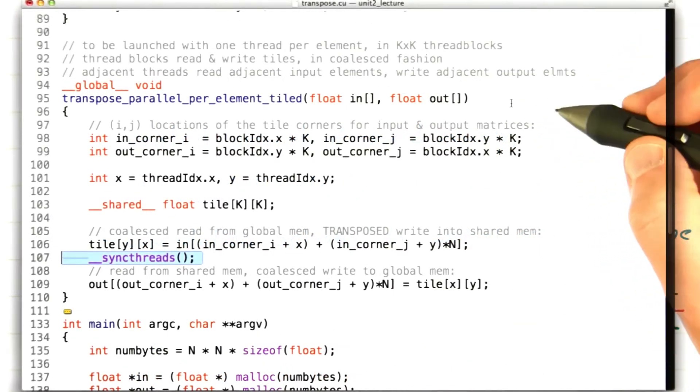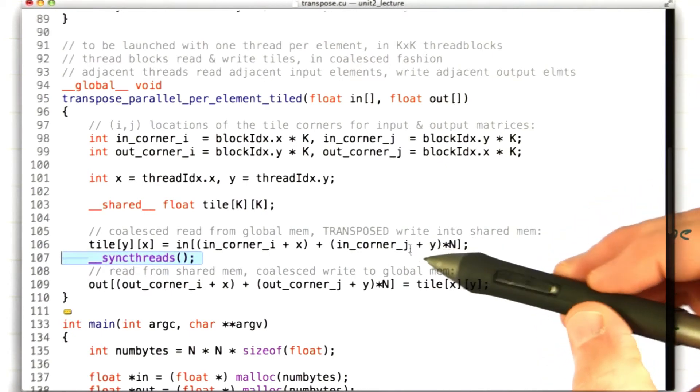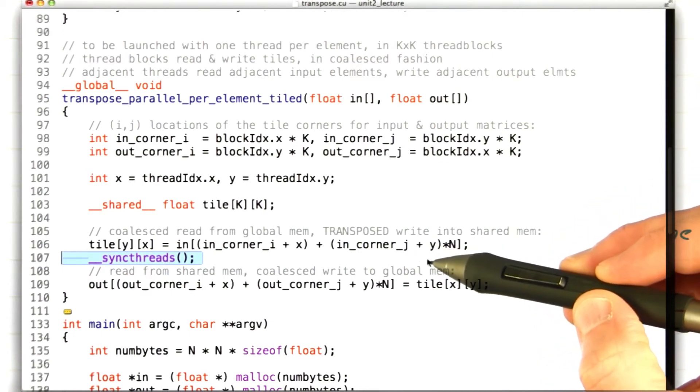Let's go back to that transpose code. Here's our kernel, and you'll recall that we concluded this sync_threads was really the problem. We need it there, but we've got a large thread block, 32 by 32 threads, 1,024 total threads.